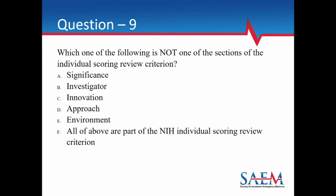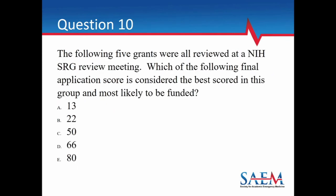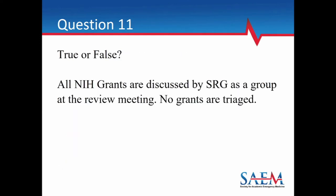Question 9: Which of the following is NOT one of the sections in the individual scoring review criterion? A — significance; B — investigator; C — innovation; D — approach; E — environment; or F — all of the above are part of the NIH individual scoring review criterion. The answer is F — all of the above are part of the criterion. Question 10: Of five grants reviewed, which final score is the best and most likely to be funded? Remember — the lower the score, the better.